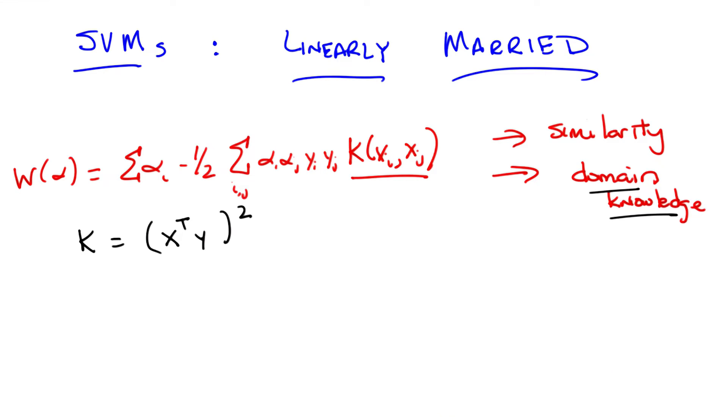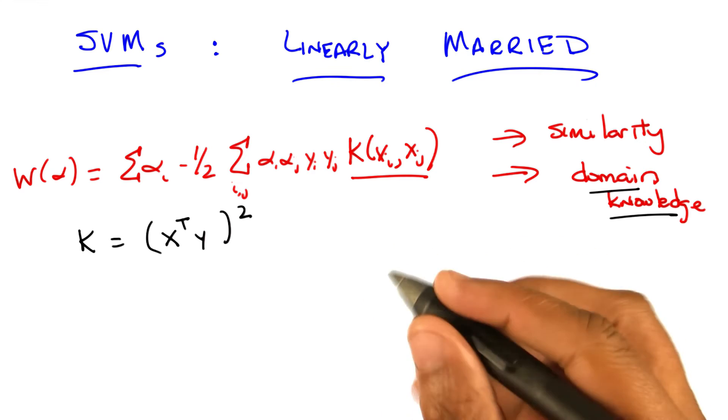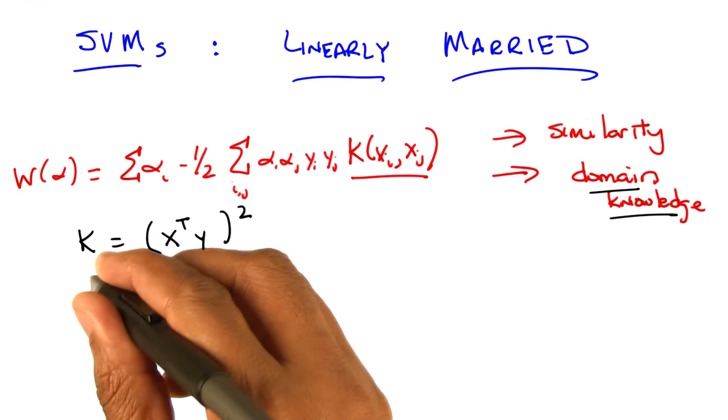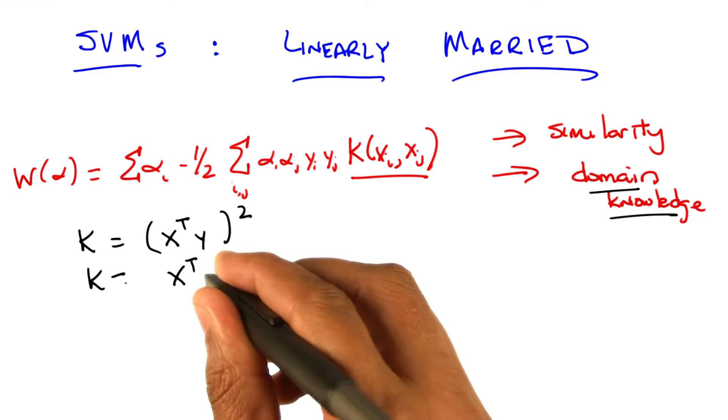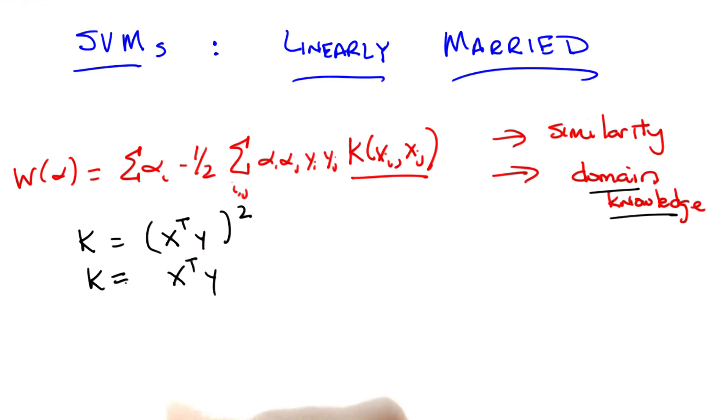And another kernel is x transpose y? Yes, that's something I would call a kernel. And the other kernel we talked about was just x transpose y by itself. That's a kernel too, isn't it? Oh no, no, that's right, that's absolutely right. So that's a different kernel, you're absolutely right. Just x transpose y is another kernel.